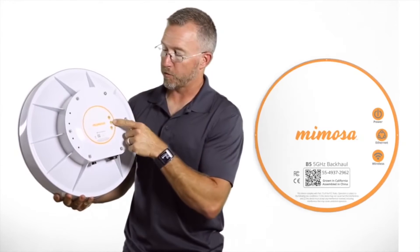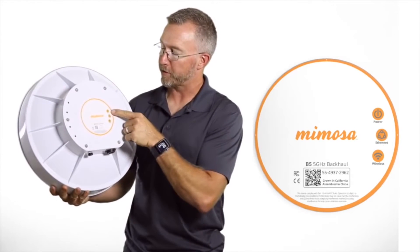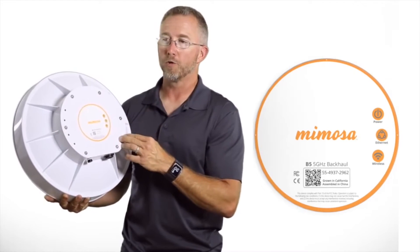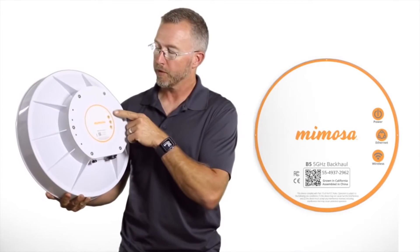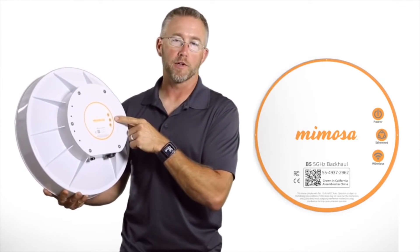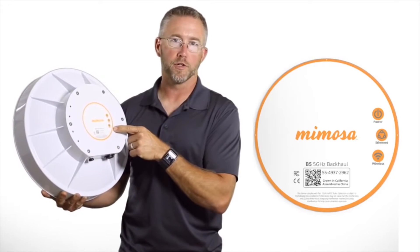The status lights, which are not on right now, but the status lights are very clear. They're very bright and visible from a great distance. So you don't have to worry about crawling up the tower or to a rooftop to see the status lights from a distance. You've got power, network activity and wireless activity as your indicators.